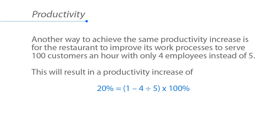To calculate this, we take 4, which is the number of employees we now have, divided by 5, the original number of employees. In a formula like this, we always have to do the multiplication and division before we do addition and subtraction — that's just standard math rule. So we take 4 divided by 5, which gives us .8. 1 minus .8 equals .2, and we multiply that by 100% and get 20%.